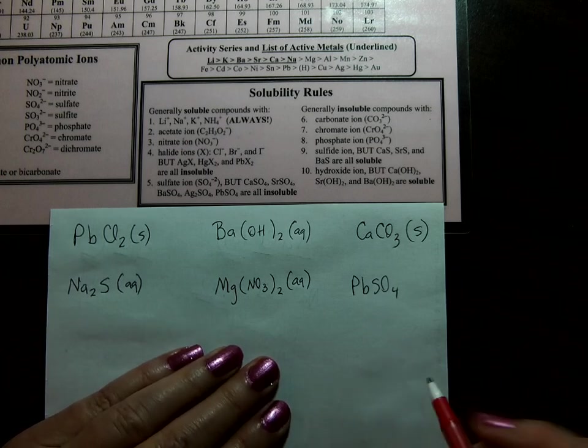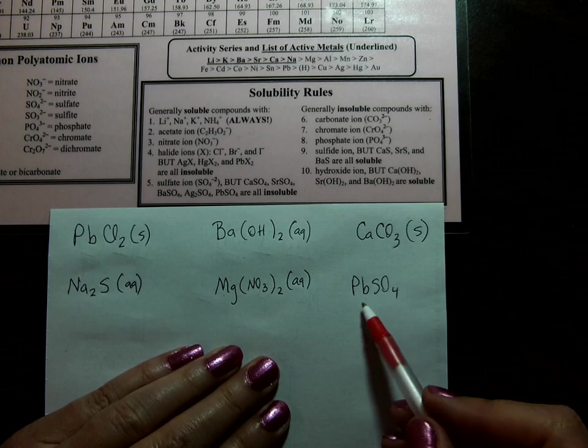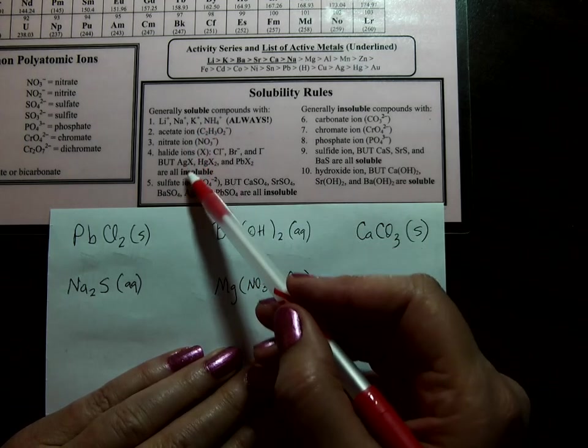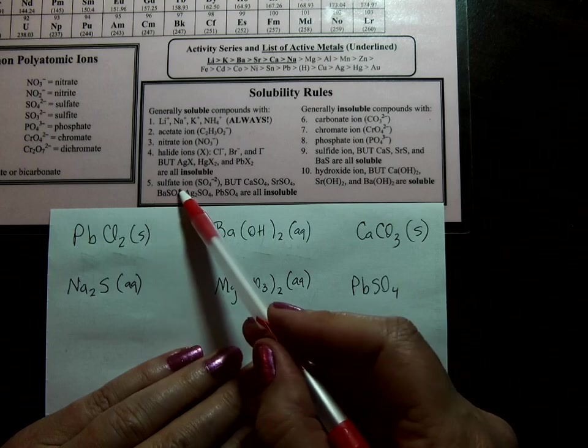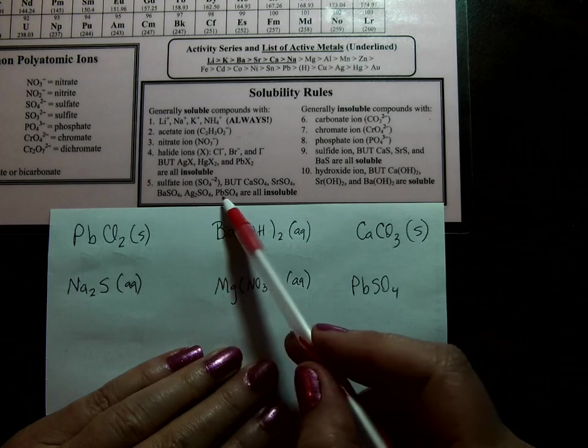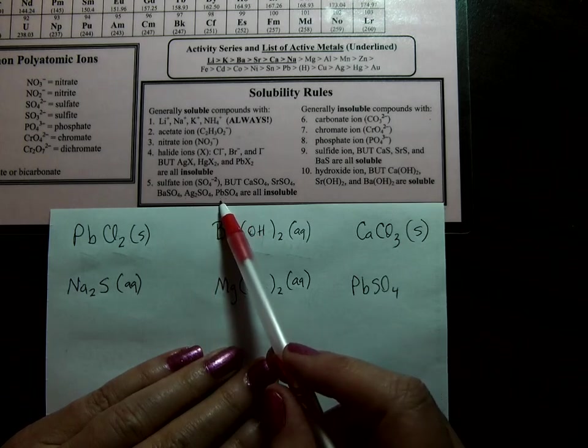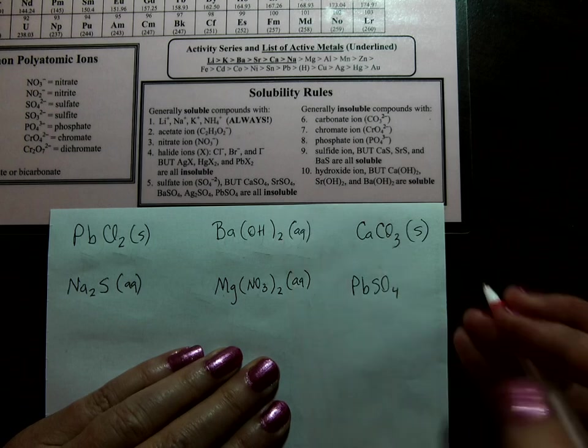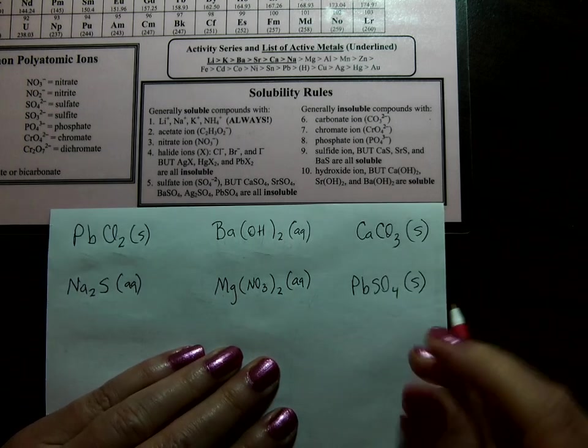And the last one, lead to sulfate. We're looking for lead or sulfate, whichever we come to first. Sulfate is rule number 5. Sulfate is soluble except with calcium, strontium, barium, silver, or lead. Lead sulfate is actually insoluble, meaning it gets an S.